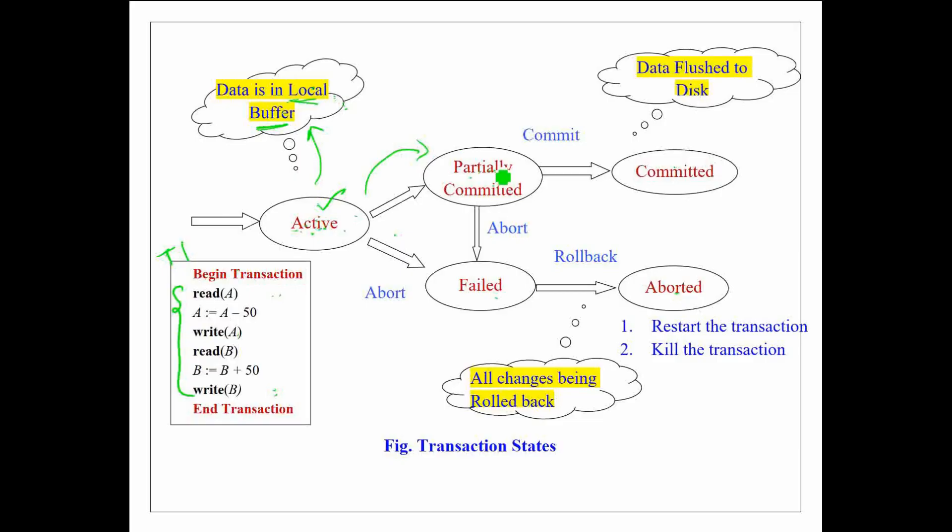When the transaction reaches partially committed state, the updated values of the data are flushed from local buffer to the disk.